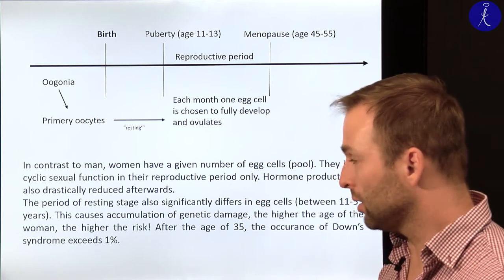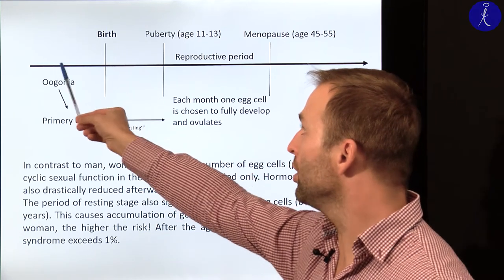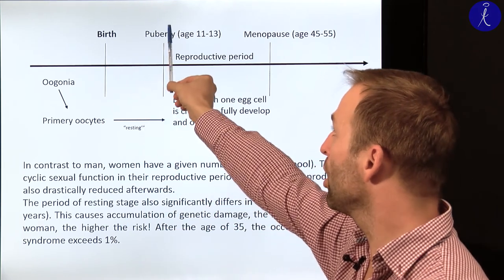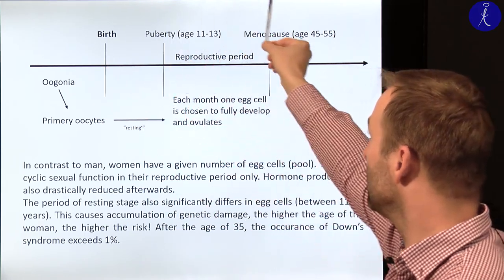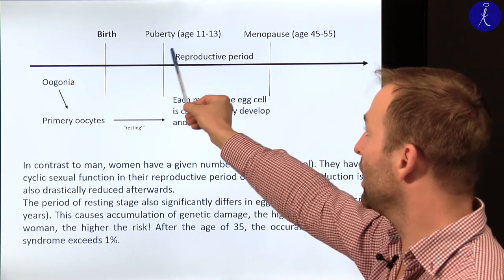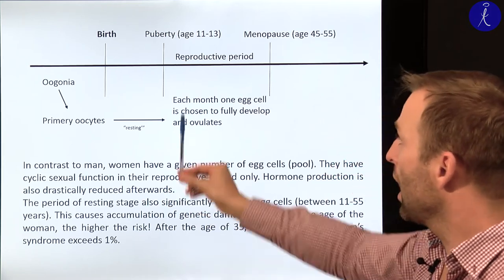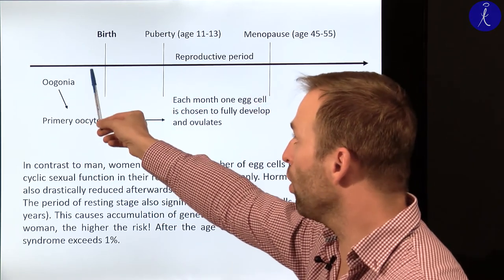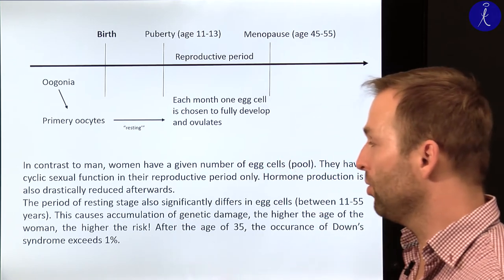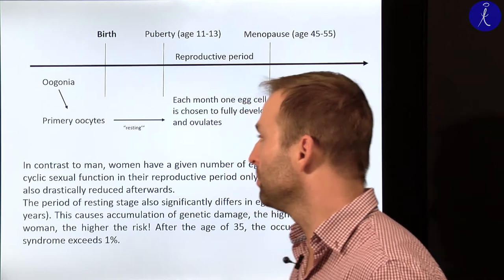Let's discuss this in a little more detail. Here you have the life of a woman: birth, puberty, menopause. In between puberty and menopause they have their so-called reproductive period. Before birth, all of the oogonia cells — the stem cells for egg production — will be turned into primary oocytes.